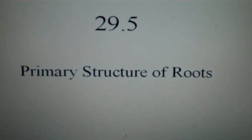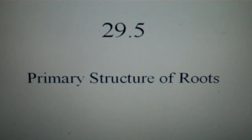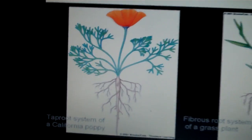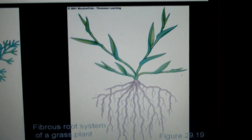The primary structure of roots. Now we have two different types of root systems. We have the tap root system, and we have the fibrous root system.